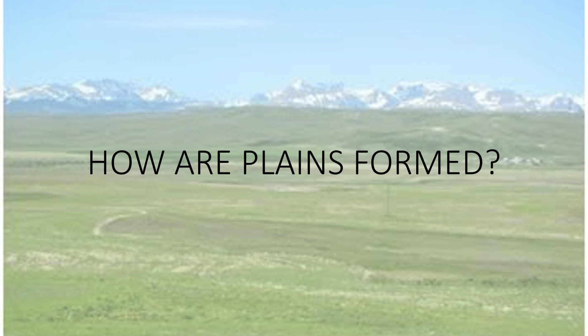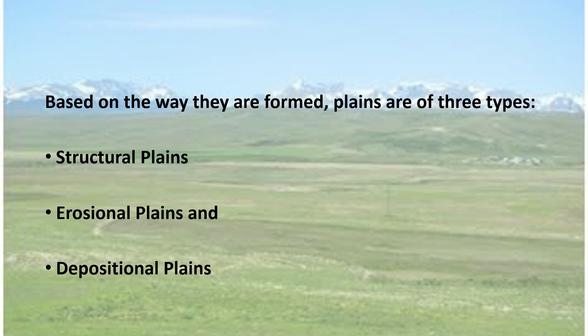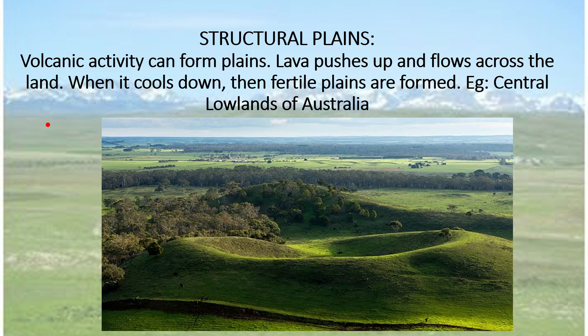Now, the question arises, how are Plains formed? Based on the way they are formed, we can divide them into three different types: structural, erosional, and depositional. When volcanic activity takes place, the volcano erupts out of the Earth and it shoots right up. Then it lands back on the Earth and starts covering a wide area with the lava. When such a thing happens, the lava starts spreading out over a huge area and it cools down. In this manner, the structural plains are formed, like the central lowlands of Australia.